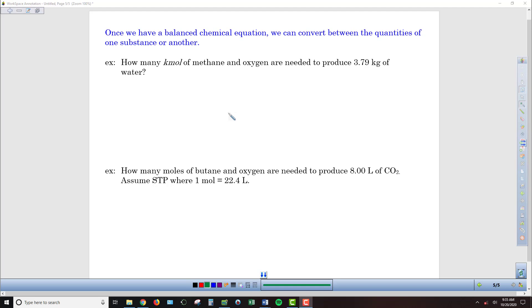Going back to our reaction of methane that we found earlier, we had the methane plus 2 moles of the oxygen yielded carbon dioxide plus 2 moles of water. We want to find how many kilomoles of methane and oxygen are needed to produce 3.79 kilograms of water.